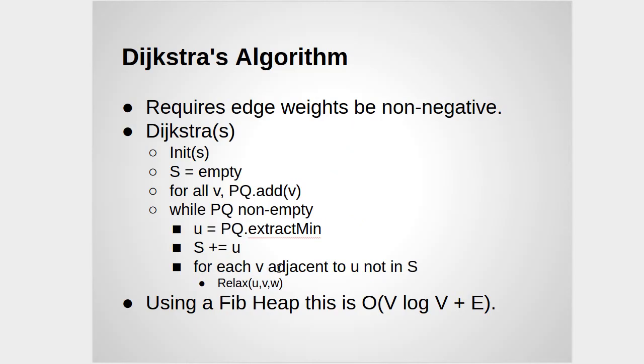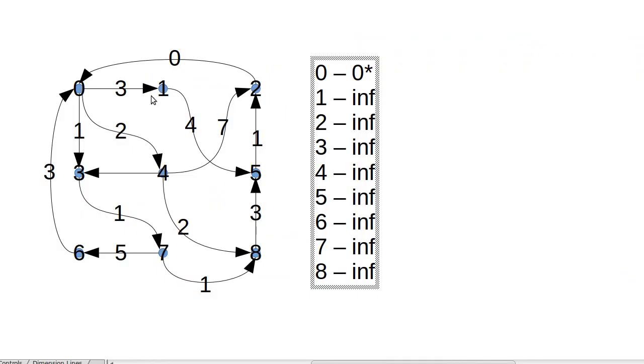And then we're going to run through everything that that connects to and call relax on it. So we wind up relaxing index one to a value of three, index three to a value of one, and index four to a value of two. I just noticed that I never bothered to put a weight on that edge, and that's why I didn't get into my graph in the earlier videos.